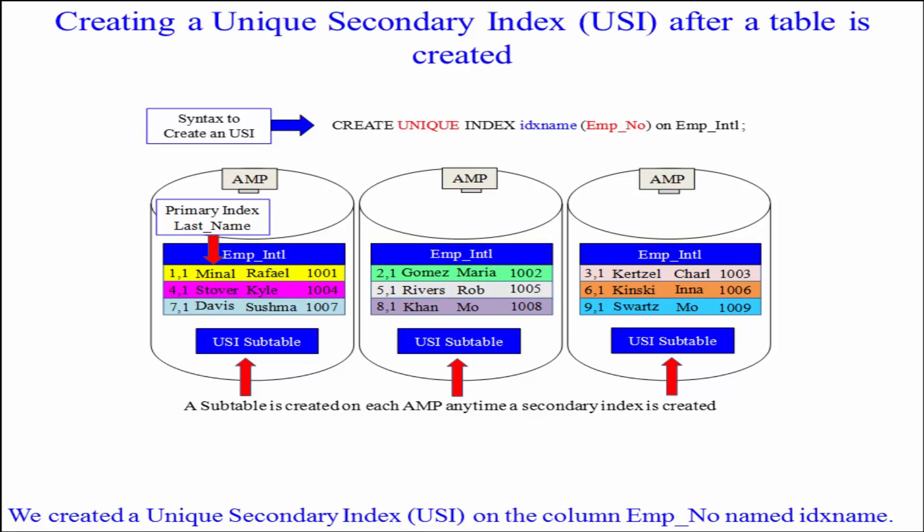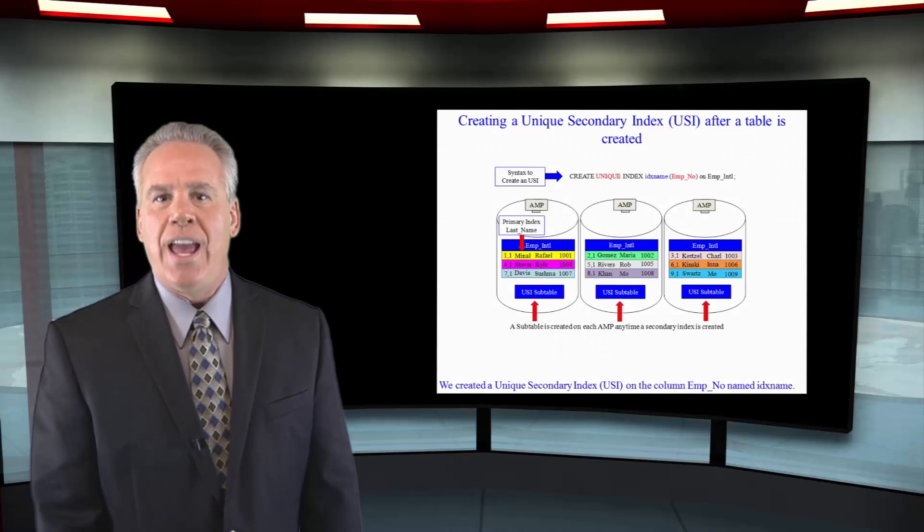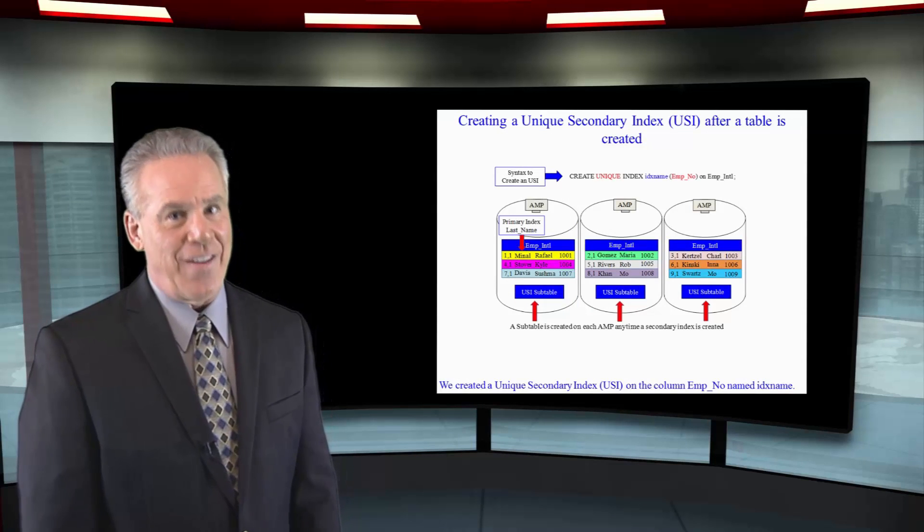In our example here we have EMP International as our table. In this case I've chosen last name to be the primary index, but now you can see how easy it is to add a unique index. I say CREATE UNIQUE INDEX, give it a name, around the column EMP_No, ON EMP International, and instantly we've created a unique secondary index on that table.